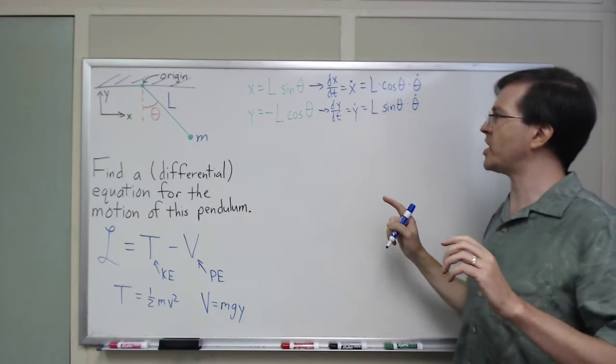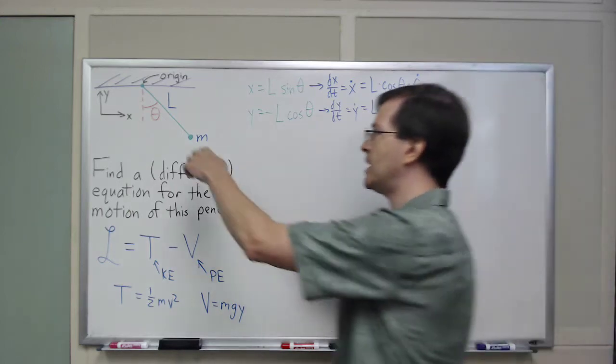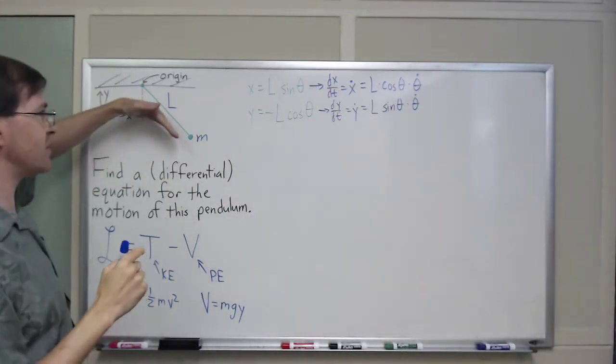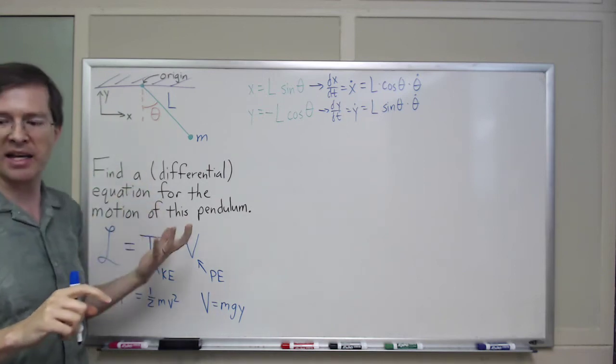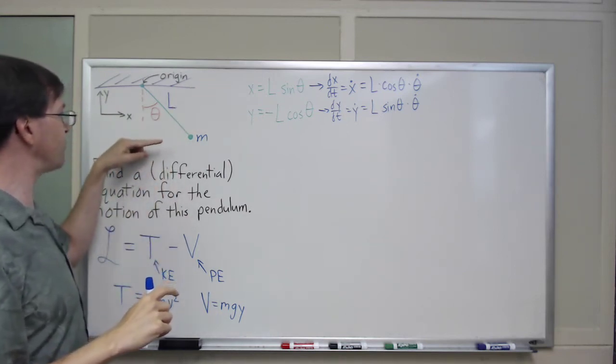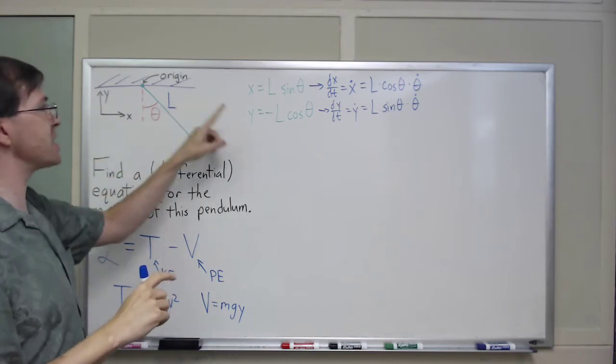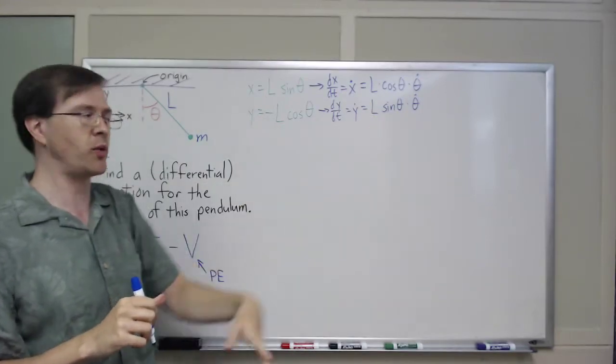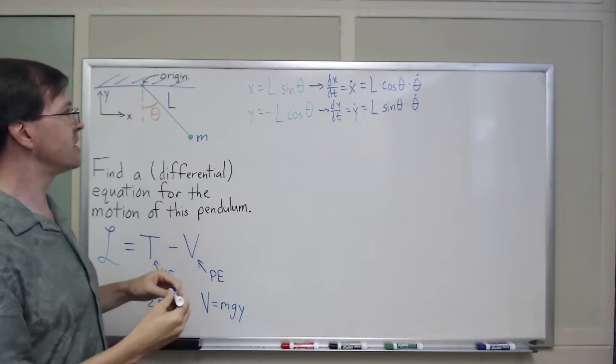Let me do a reasonableness check here. If my theta is in the position I've drawn it here, if that's positive theta, and theta dot is positive, say it's increasing, this is swinging upward, and that is a speed up and to the right, both positive. Yep, these are both positive in that situation. So, okay, I feel good. These seem reasonable.